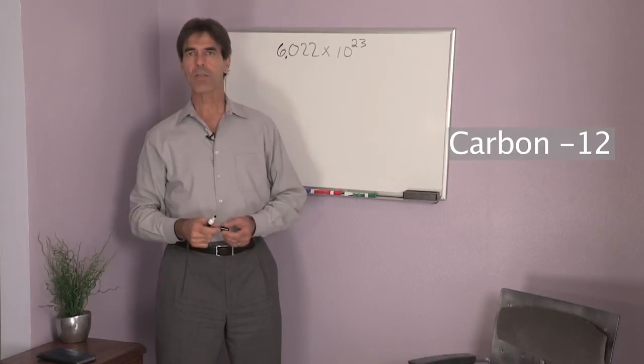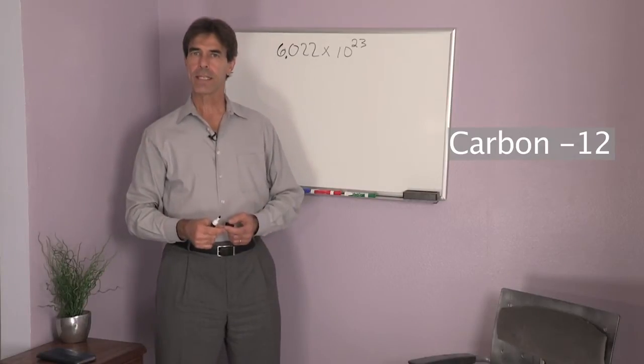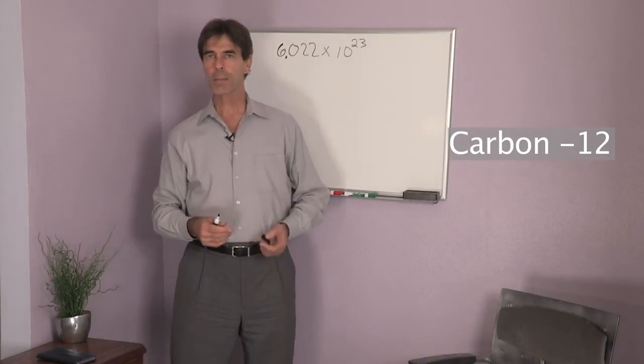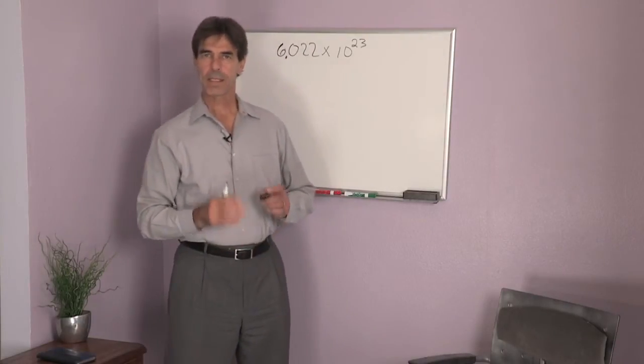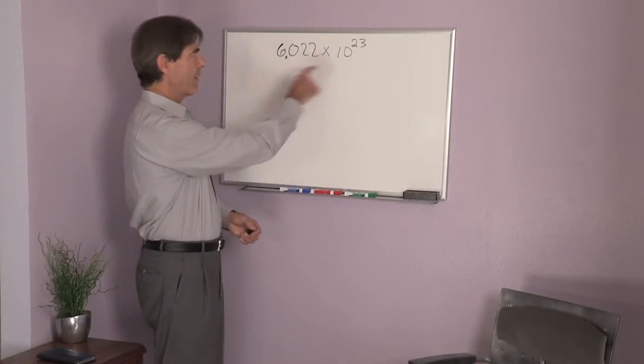It's a carbon called carbon 12 that has exactly six protons and six neutrons in the nucleus. There's other forms of carbon, like carbon 13, carbon 14, but it's defined as 12 grams of carbon 12. That's the number.